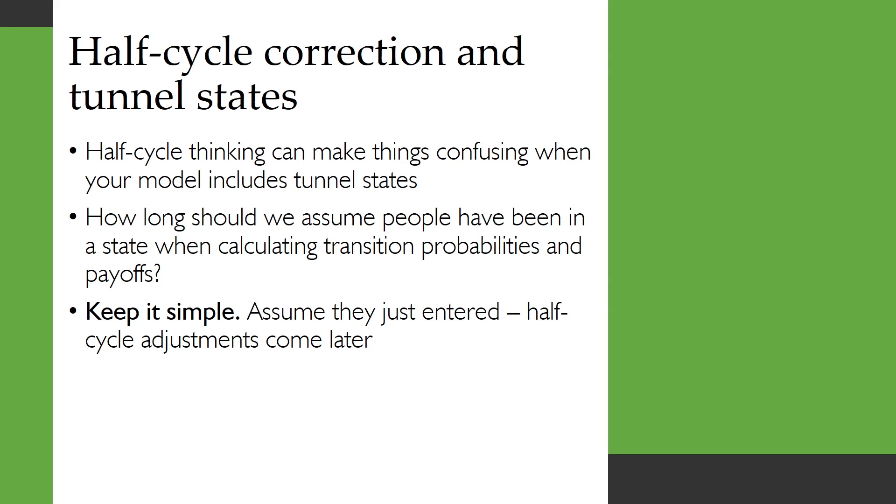And we use this to determine the transition probabilities and payoffs. Half cycle thinking can make things confusing when your model includes tunnel states. You might ask yourself how long should we assume people have been in a state when you're calculating transition probabilities and payoffs? You know did they enter this state half a cycle ago? And my advice is just keep it simple. Assume that they just entered and those half cycle adjustments will come later.